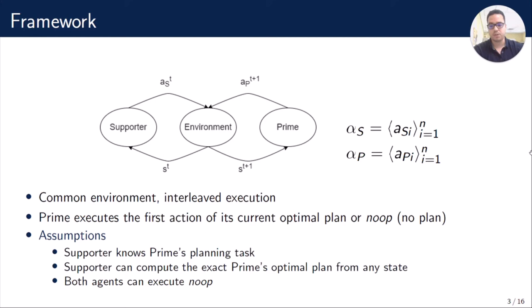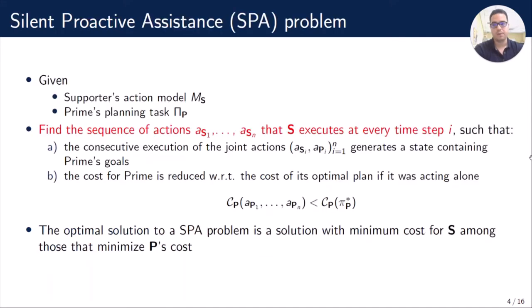We have the following assumptions. First, Supporter knows Prime's planning task. Second, Supporter can compute the exact Prime's optimal plan from any state. And the last one, both agents can compute no-operation. We want to solve the silent proactive assistance problem. It is defined by a tuple of a Supporter action model — a planning task with no defined goals — and Prime's planning task. Our purpose is to find the sequence of actions that Supporter executes at every time step such that the consecutive execution of the joint actions in an interleaved way generates a state containing Prime's goals, and the cost for Prime is reduced with respect to the cost of its optimal plan if acting alone. The optimal solution minimizes Supporter's cost among those solutions that also minimize Prime's total cost.